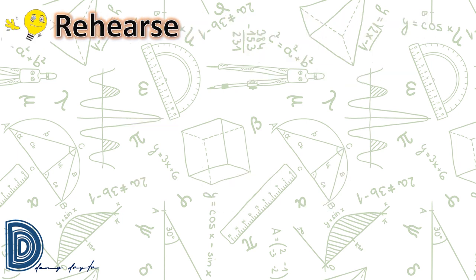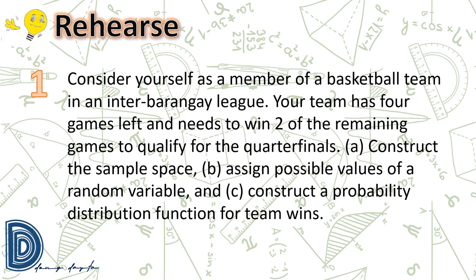Now let us have practice exercises. You will be given 15 seconds to answer each exercise. You may pause if you need more time, then play again to check whether your answer is correct. Number one: consider yourself as a member of a basketball team in an inter-barangay league. Your team has four games left and needs to win two of the remaining games to qualify for the quarterfinals. (a) Construct the sample space, (b) assign possible values of a random variable, and (c) construct a probability distribution function for team wins.